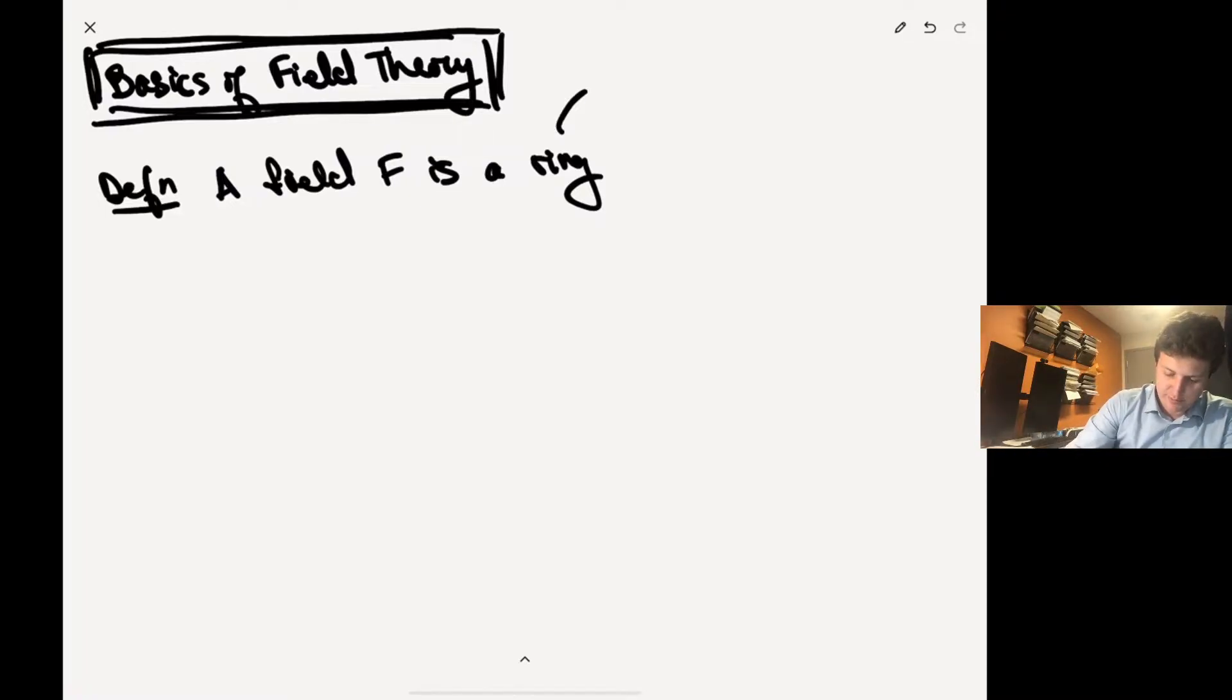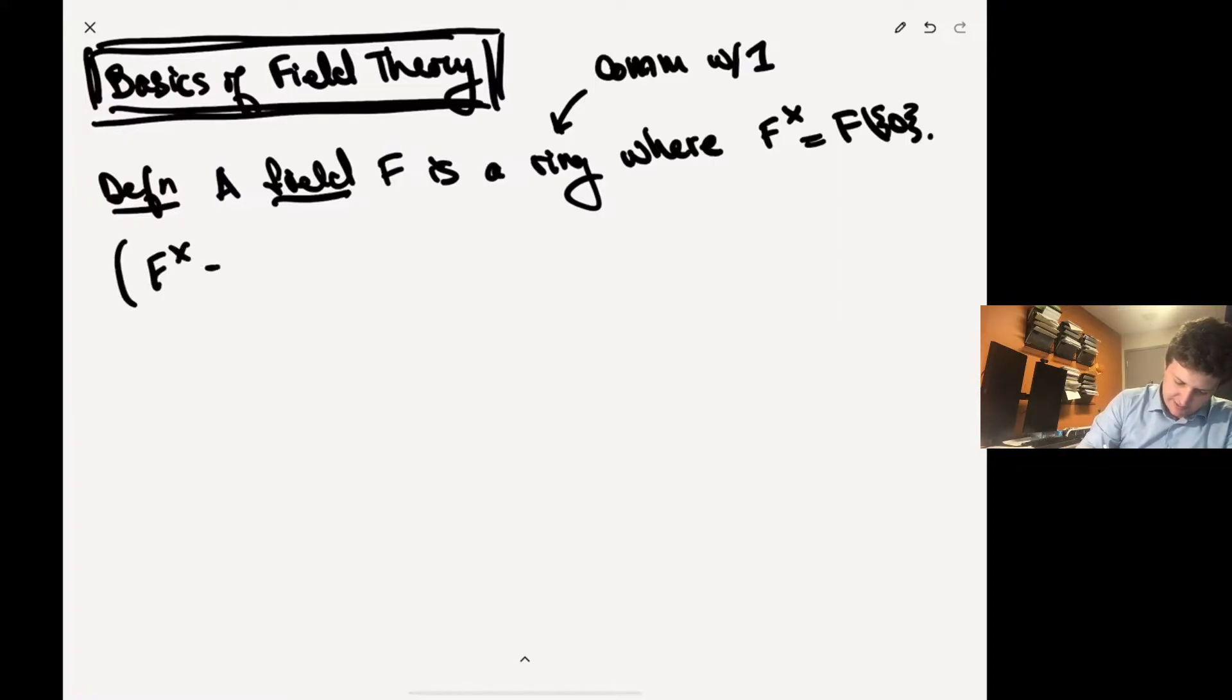Let's say F×, so the units of the ring - this is F set minus zero. Okay, so this is... and so here let's just recall that F× are the units of F, and so this is the set of a in F where a has a multiplicative inverse.